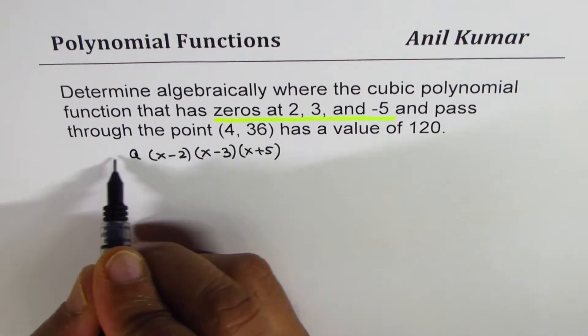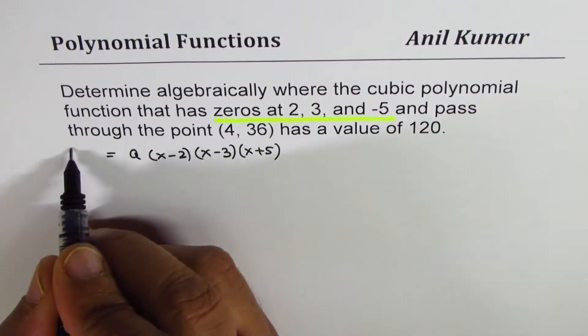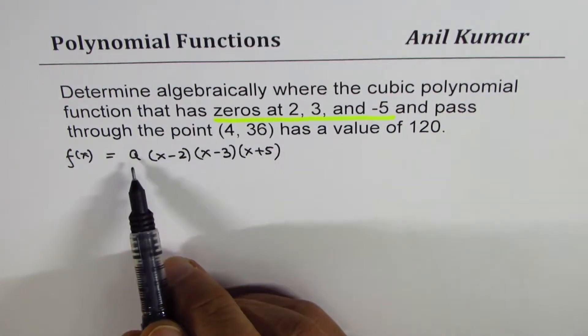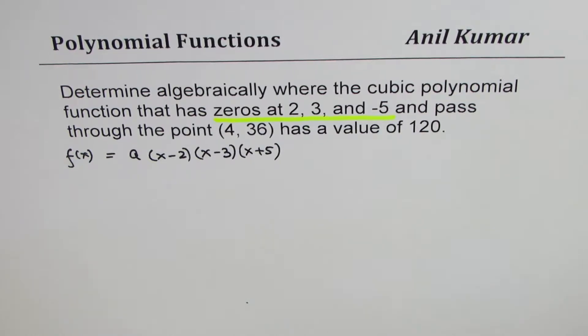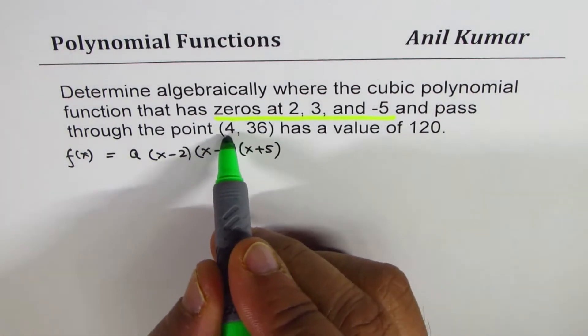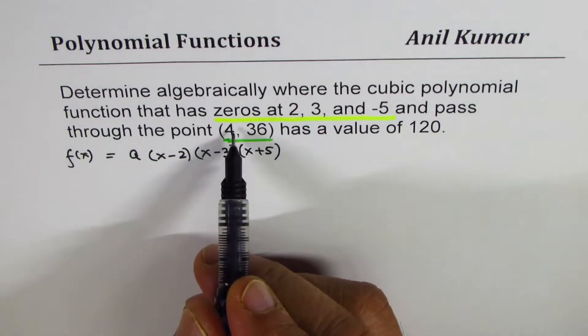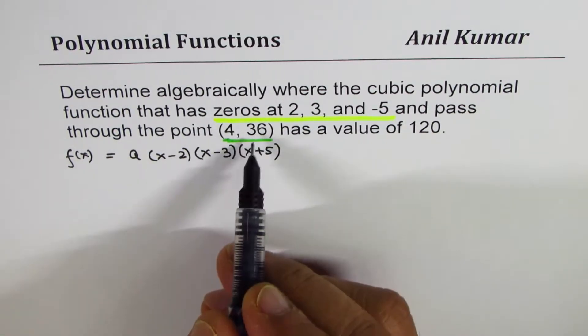As a general polynomial, write A, and let's write this as f(x). So that becomes the equation of a polynomial. To find A, we'll consider the given point. It passes through (4, 36), correct? That really means that 4 is x value, 36 is y value, f(x).